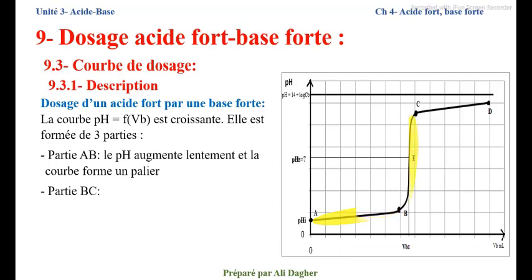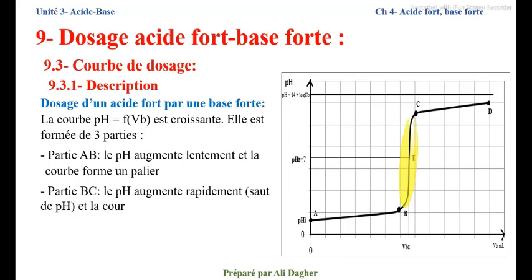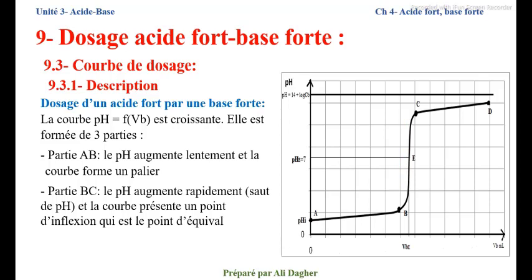Partie B-C : le pH augmente rapidement, c'est une chute de pH — la courbe présente un point d'inflexion qui est le point d'équivalence.